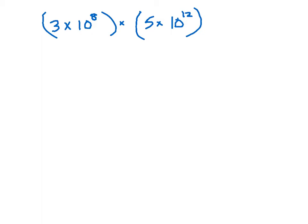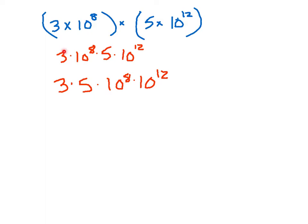The last example is what happens when you multiply two numbers in scientific notation. Let's say we have 3 × 10^8 times 5 × 10^12. Both are very large numbers. Notice all terms are separated by multiplication. Since multiplication is commutative, we can rearrange: 3 × 10^8 × 5 × 10^12 becomes 3 × 5 × 10^8 × 10^12. We can move things around without changing the value of the expression.